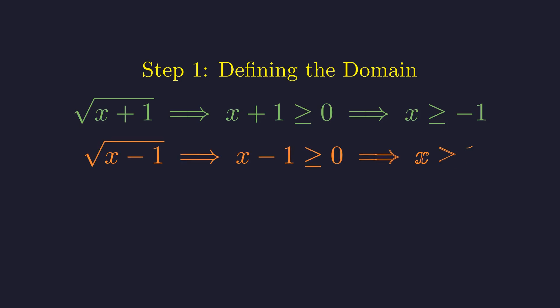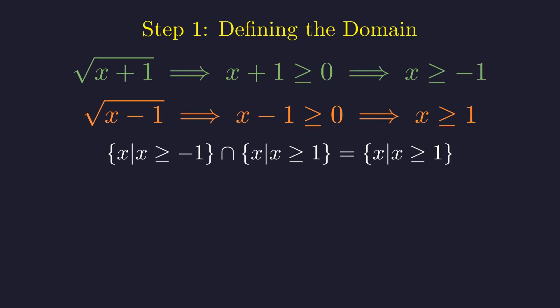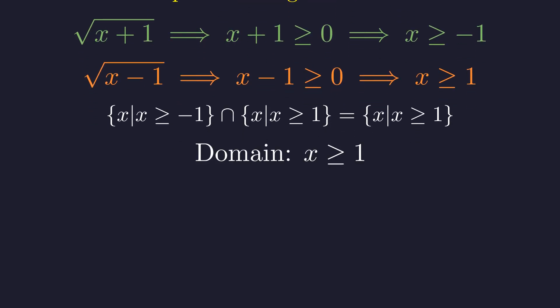For the second square root, x minus 1 also needs to be non-negative. This gives us x minus 1 greater than or equal to 0, so x must be at least 1. For both square roots to be real at the same time, x needs to satisfy both conditions. The intersection of x ≥ −1 and x ≥ 1 is just the more restrictive one.